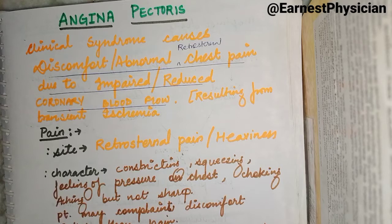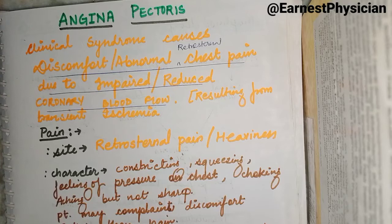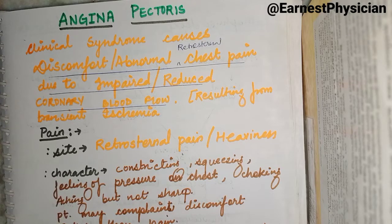Hello everyone, our topic is Angina Pectoris. We have completed chest pain and differential diagnosis, so we will help differentiate Angina Pectoris from other diseases. If you haven't seen that, go ahead and check that video. We started the cardiovascular series step by step — physiology, cardiac output, ECG complete, regulation of arterial blood pressure, heart rate, stroke volume, and cardiovascular system. After that, we covered chest pain diseases, and now we are doing angina pectoris.